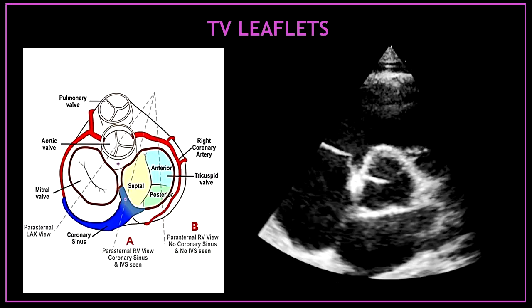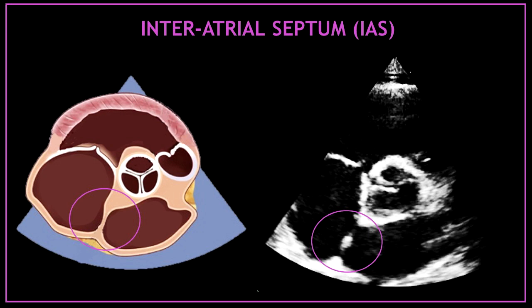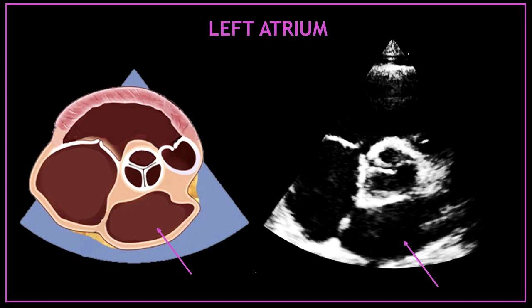In this picture you can see which tricuspid valve leaflets you can encounter depending on the cut. Lower down, that black space or echo-free space under the tricuspid valve is the right atrium. That thin line dividing two chambers is the interatrial septum. This large echo-free space at the bottom corresponds to the left atrium.